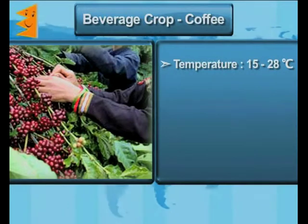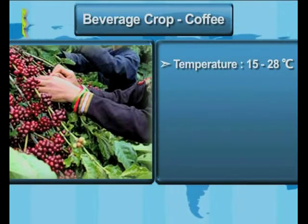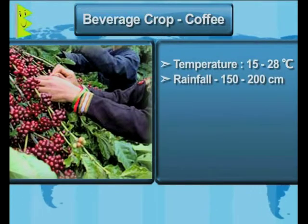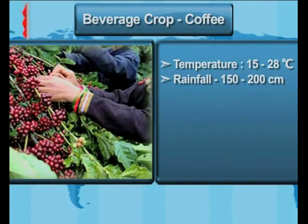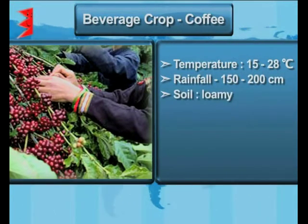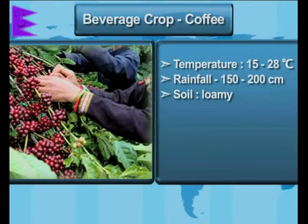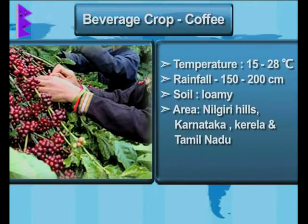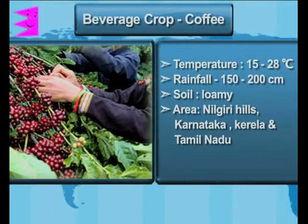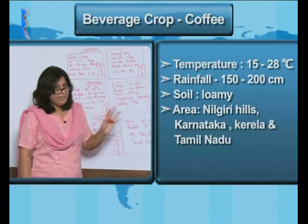For coffee: the temperature required is 15 to 28 degrees centigrade, rainfall required is 150 to 200 centimeters, loamy soil is required for this crop. It is grown in the Nilgiri Hills, Karnataka, Kerala, and Tamil Nadu. Isn't it very easy if you just make boxes and remember it like this instead of cramming it day and night?